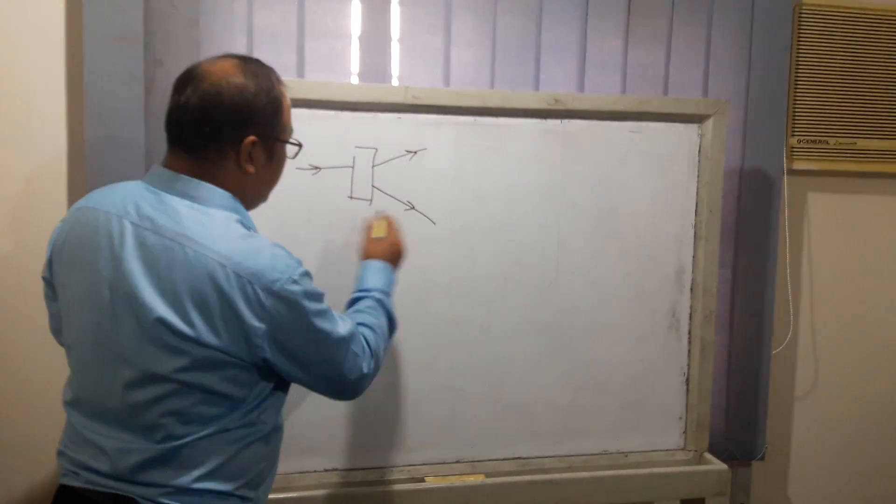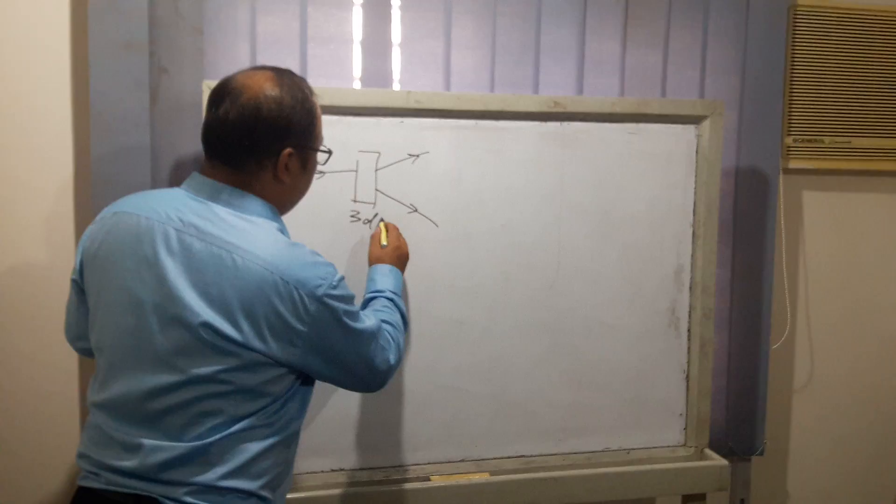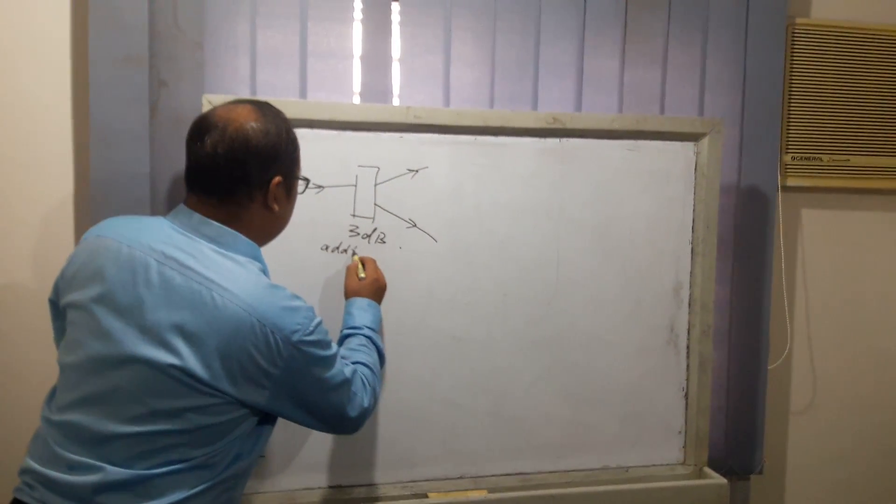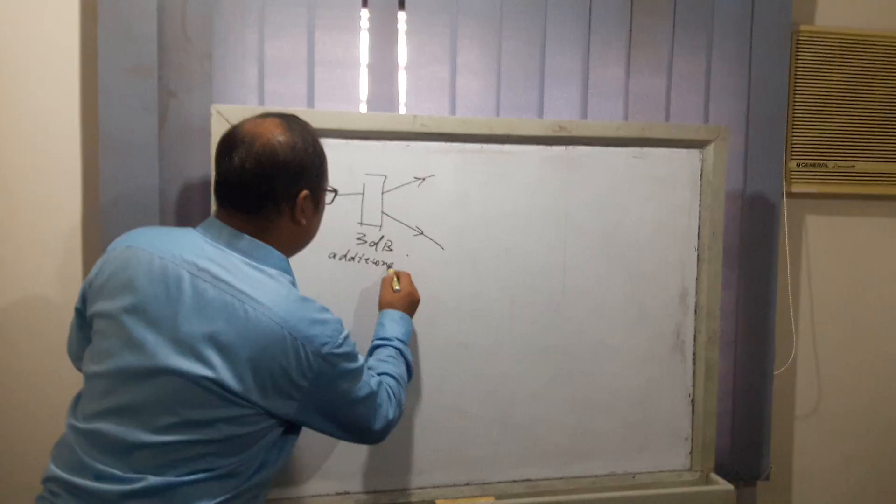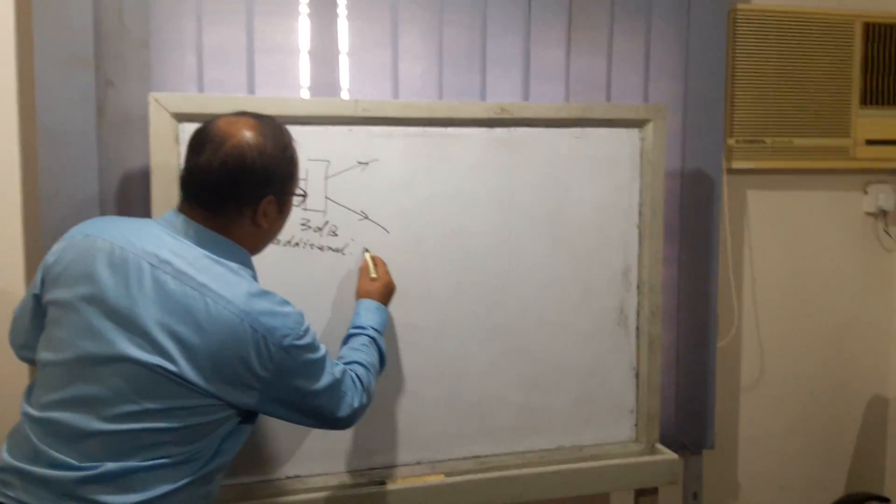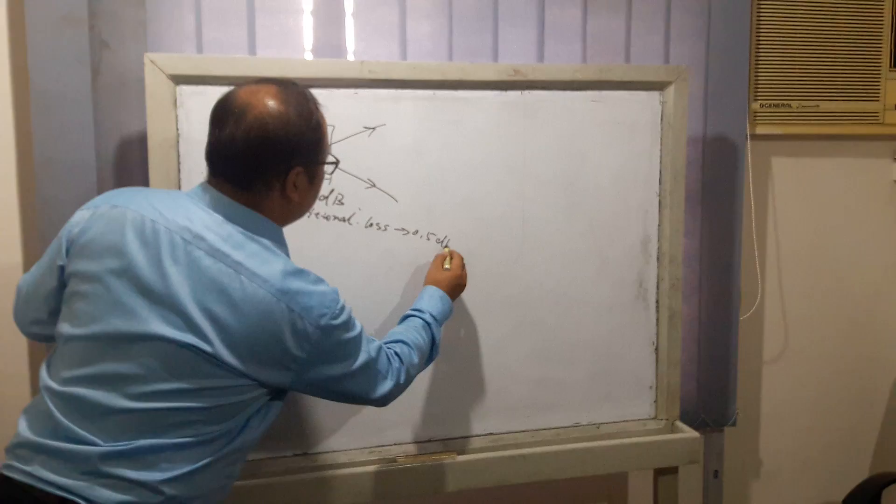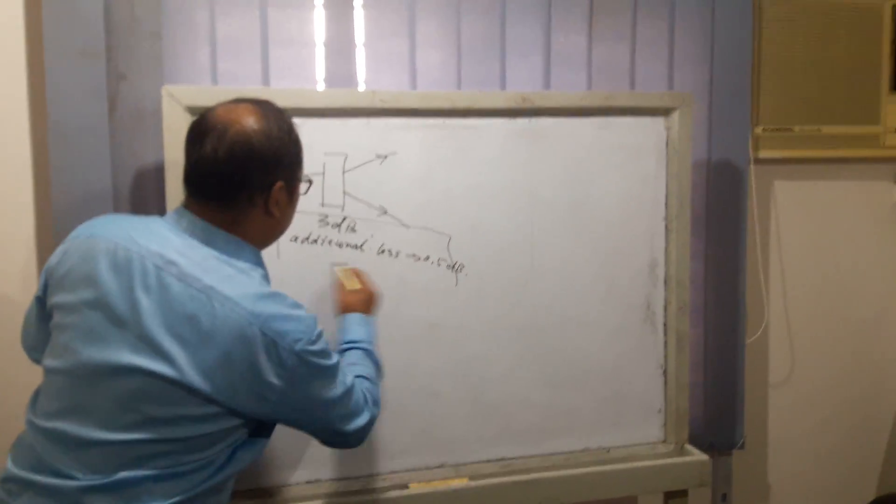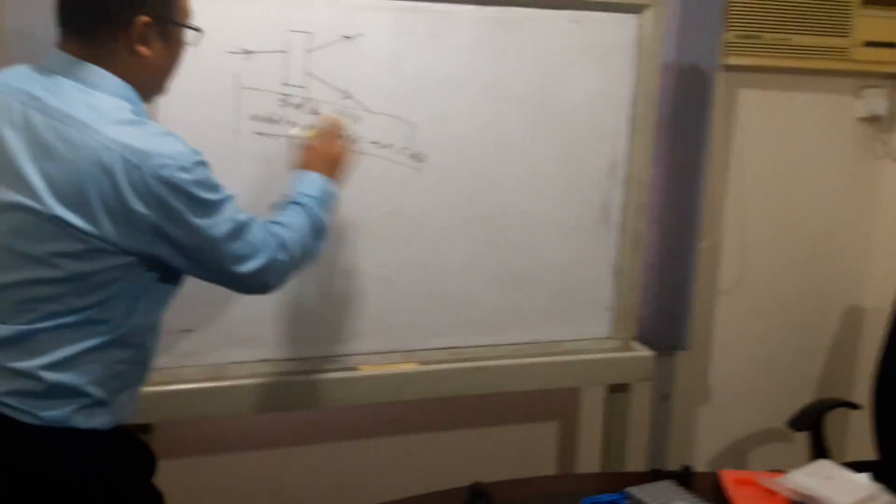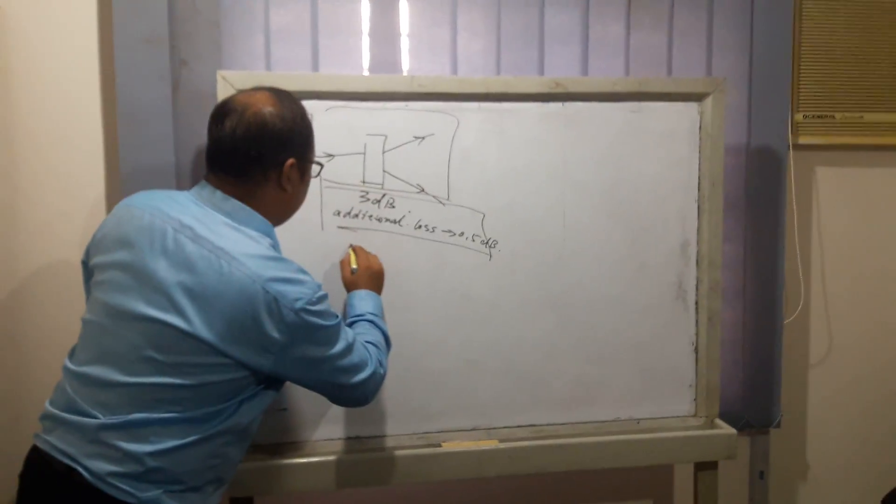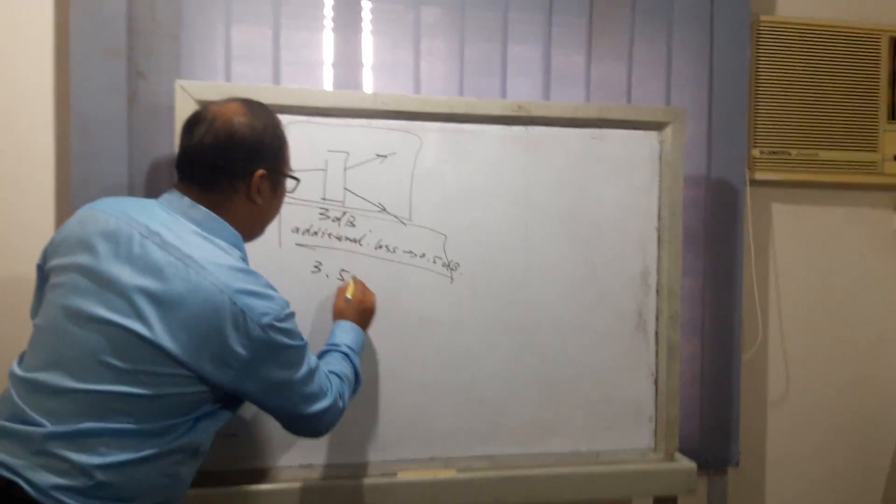The splitter's attenuation is about 3 dB, and additional loss is about 0.5 dB. So the total attenuation of this 1:2 splitter is 3.5 dB.